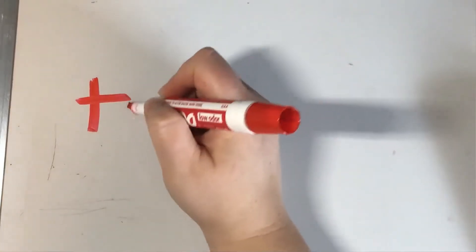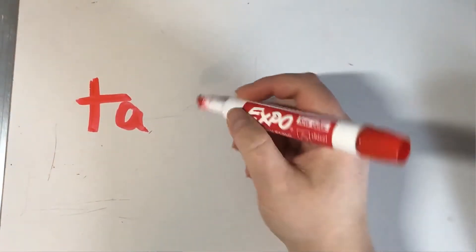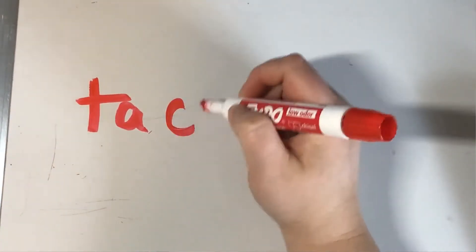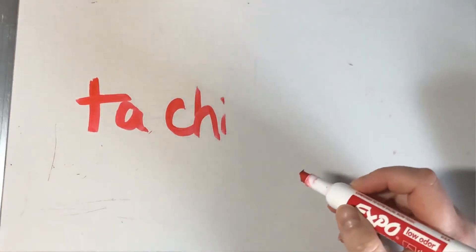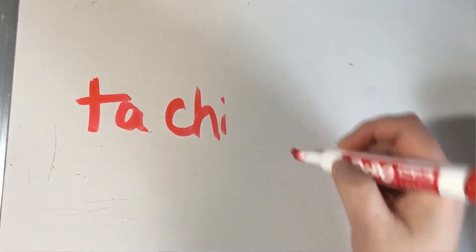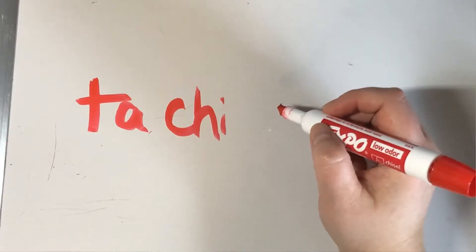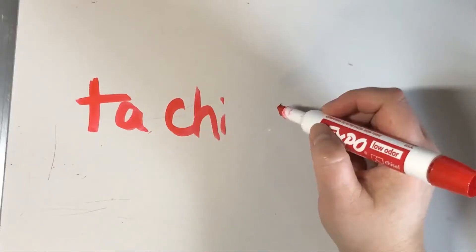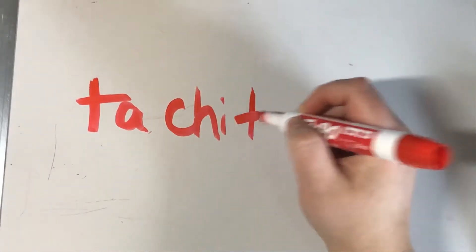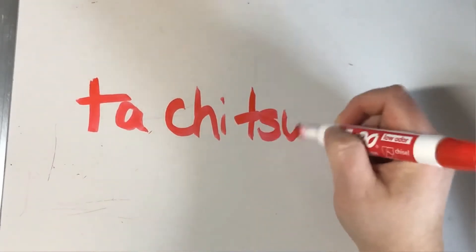We're going to start with the T-row. So we have ta. Now instead of ti, we're actually going to pronounce it chi. And instead of tu, it's going to be tsu — you use your tongue to push against the back of your teeth to make that tsu sound. Then te, to.